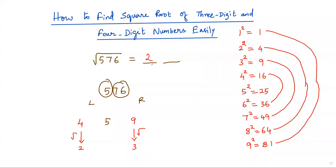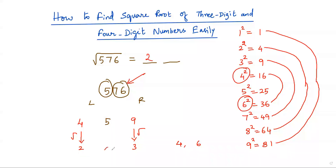Now I have the first digit, 2. To get the second digit, I consider the second group which contains 76. The digit at the ones place in 76 is 6. Looking at the squares of the nine digits, 4² and 6² both result in 6 at the ones place, so the candidates for the second digit are 4 and 6.